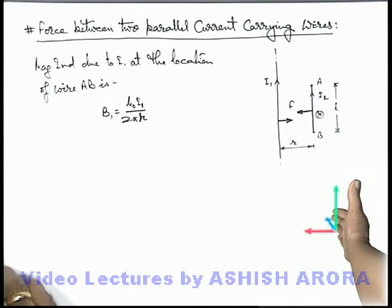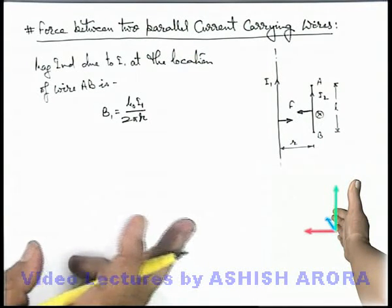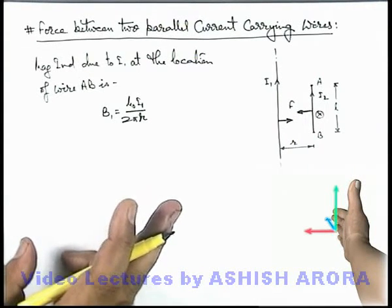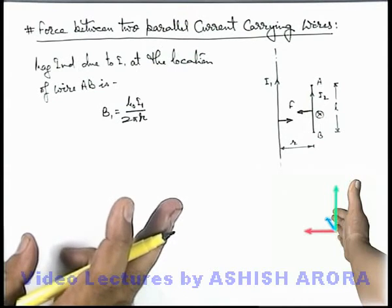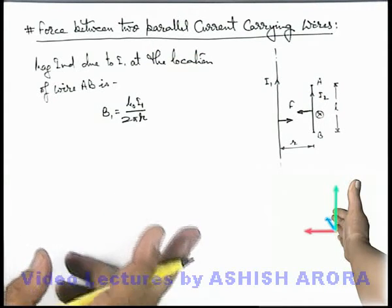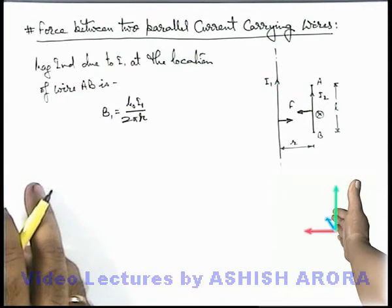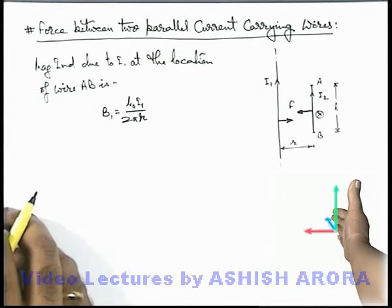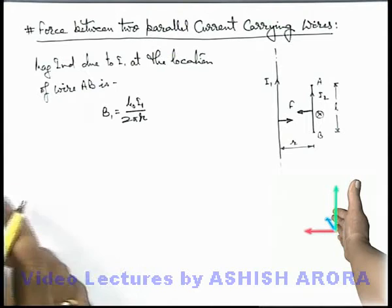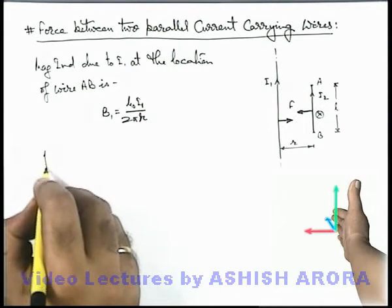So now in this situation, you can once again verify by your own right hand whether I have done the directions correct or not. Here we can see this right hand again in a realistic situation by which we can show that force acting on wire AB will be toward the left.